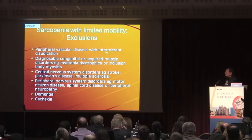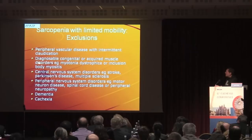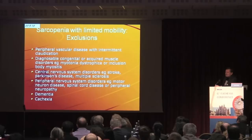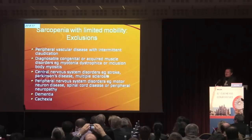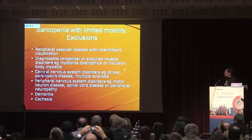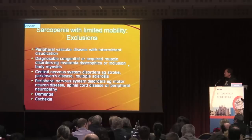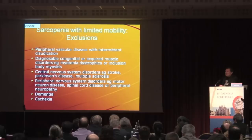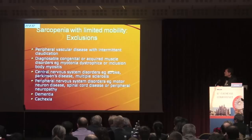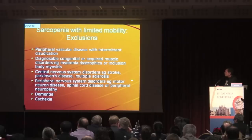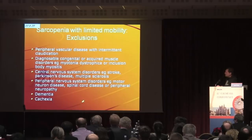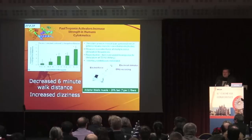We had some clear exclusions: peripheral vascular disease with intermittent claudication; diagnosable congenital or acquired muscle diseases such as myotonia dystrophica and inclusion body myositis. Inclusion body myositis is an orphan disease that deserves much more attention — it is a true disease of middle-aged people with muscle problems, most probably fixable. It's an inflammatory disorder, but it is not sarcopenia and it is not cachexia. Central nervous system disorders — stroke, Parkinson's disease, multiple sclerosis — are clearly different. Peripheral nervous system disorders such as spinal cord disease or peripheral neuropathy are also excluded. There was a need to exclude cachexia, and many wanted to exclude dementia, though many dementia patients can be sarcopenic as well.